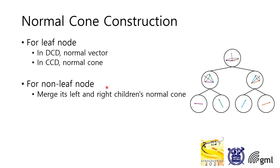For non-leaf nodes, we can get the normal cone by merging two normal cones from left and right children. So to make proper normal cones of nodes, the algorithm that merges two children's cones is important.